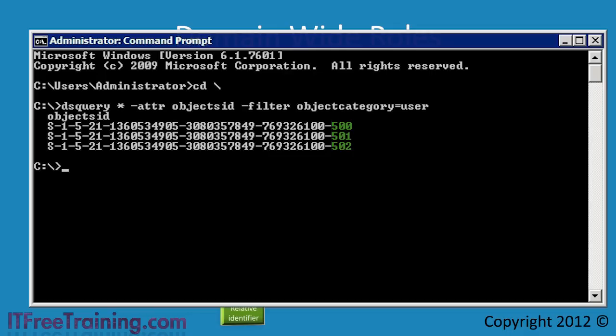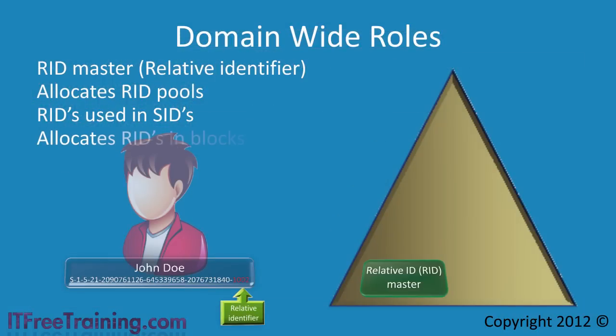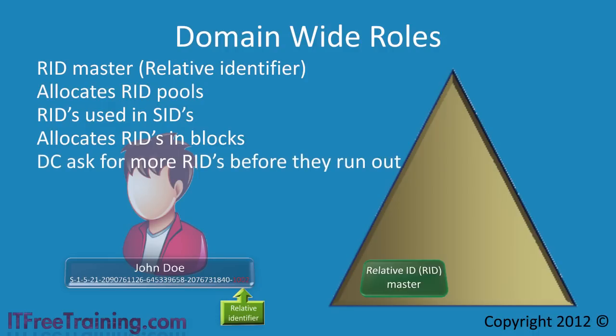The relative ID is a sequence of numbers that is allocated by the RID master. The RID master gives out relative IDs in blocks, so you don't need a super fast connection back to the RID master. Also, a domain controller will request more relative IDs from the RID master before it runs out. If the RID master is down for a little while, it should not have an impact on your organization. However, you would want to make sure the outages are small, as if the RID master is down and your servers run out of relative IDs, no new objects in Active Directory can be created.